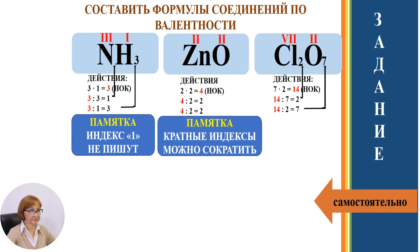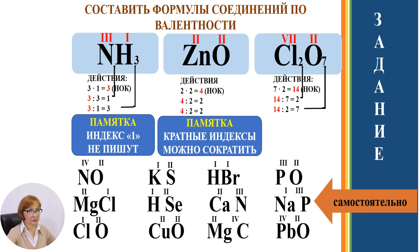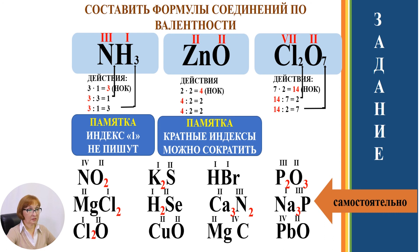А теперь выполните задание самостоятельно. В данных формулах определите индексы и составьте формулы веществ. Проверим: NO2, KCl, HBr — валентности одинаковые, индексы не выставляем. Следующая: P2O3. Дальше: MgCl2, H2Se, Ca3(N)2, NO2, Na3P, ClO, CuO — валентности одинаковые, индексы не выставляем. MgS, PbO2.